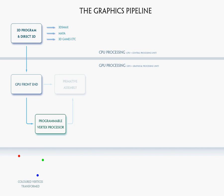The next thing that happens is primitive assembly, which basically means connect the dots. The programmable vertex processor passes the vertices to primitive assembly, and the primitive assembler connects them to create triangles. So you've just got vertices at this point — once they're passed to primitive assembly, you get triangles out.